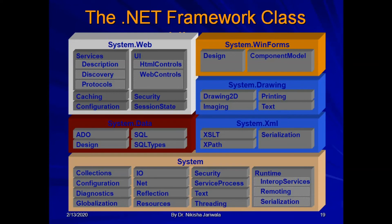Within this diagram, I have specified some common namespaces along with their classes. With the help of the .NET Framework class library, we can easily develop different types of applications within .NET Framework — we can develop web applications, Windows applications, web services, Windows services, etc. This means that with the help of the class library, our programming tasks become quite easier.